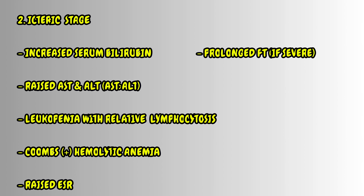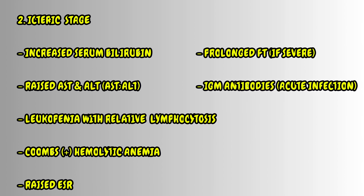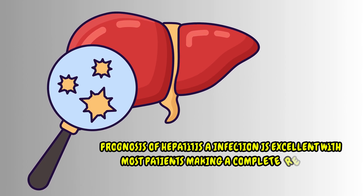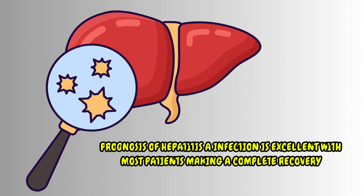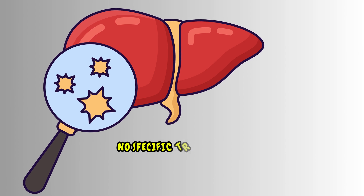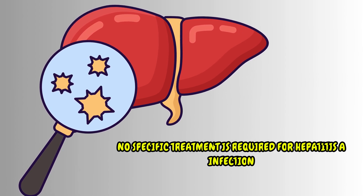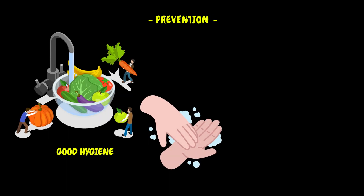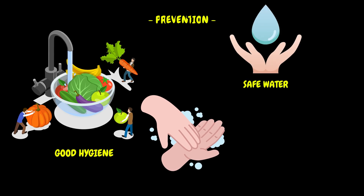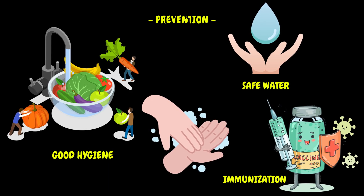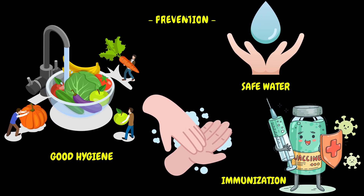Viral markers such as IgM antibodies to hepatitis A virus indicate acute infection. Prognosis of hepatitis A infection is excellent, with most patients making a complete recovery. No specific treatment is required for hepatitis A infection. Maintaining good hygiene, drinking safe water, and immunization in high-risk people will help prevent hepatitis A infection.